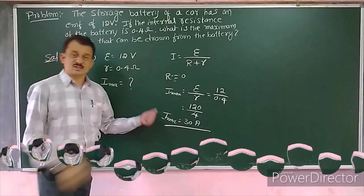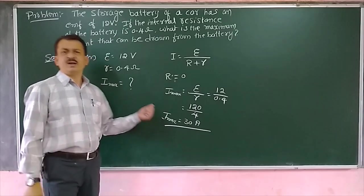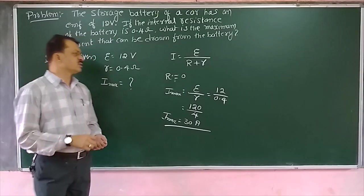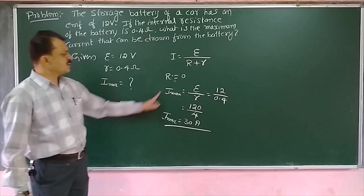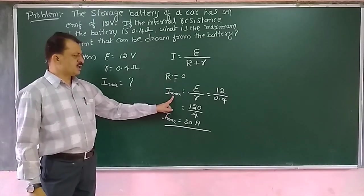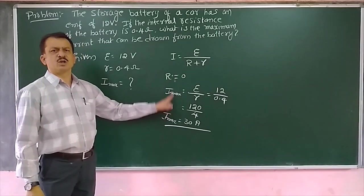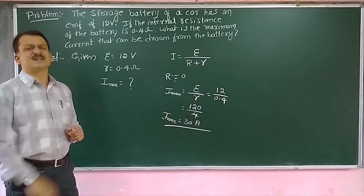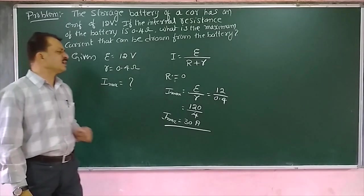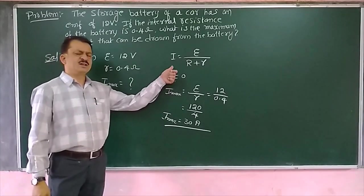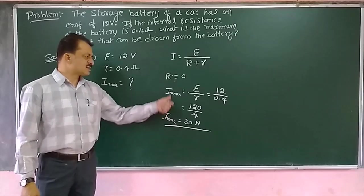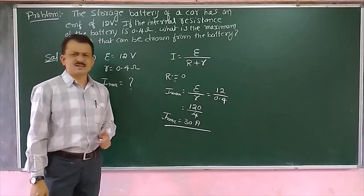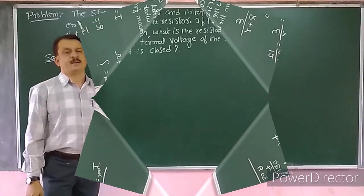This much amount of current can be drawn from the battery. The simple thing is: maximum current is possible only when the external load is zero, or that is an open circuit. When the circuit is open, the maximum current that can be drawn from the battery is 30 amps.